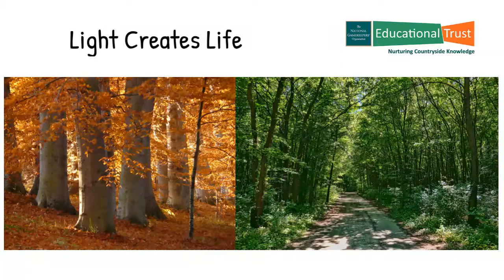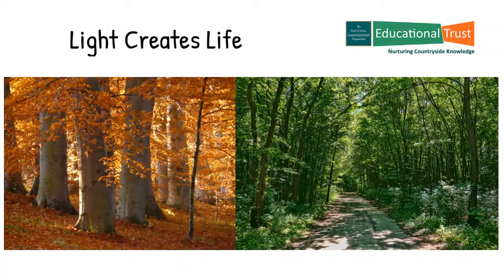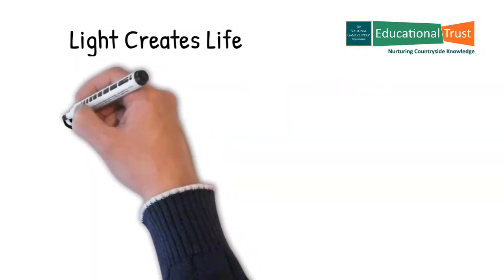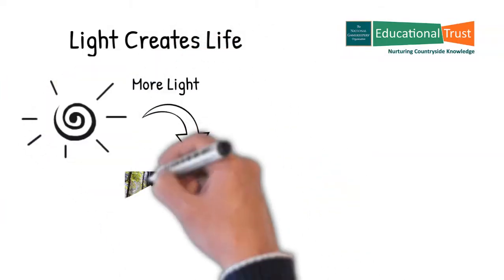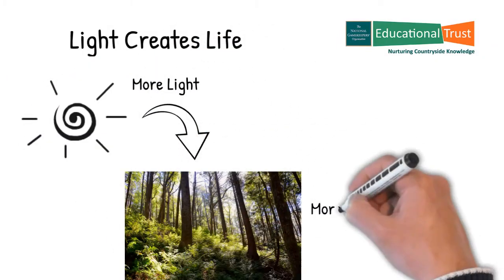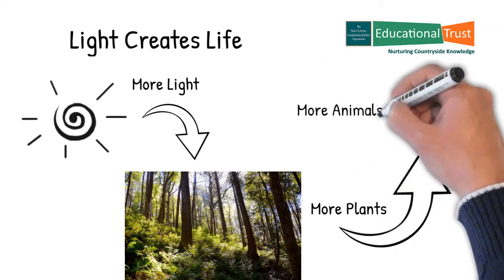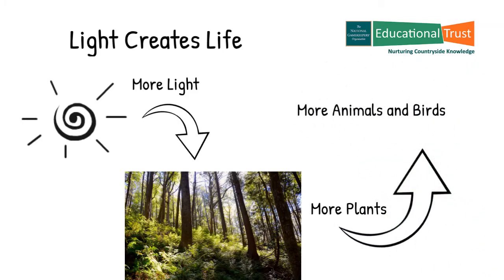There is often a rich understory and field layer in ash woodlands. A variety of light levels from deep shade through to open well-lit clearings will encourage the development of a wide range of plant species beneath the main tree canopy. It then follows that the wider the range of plant species, the greater the diversity of animal species, both vertebrates and invertebrates.